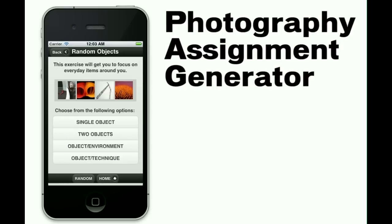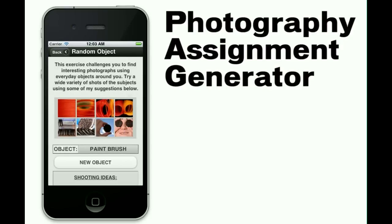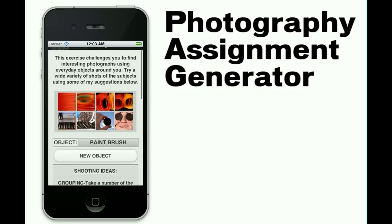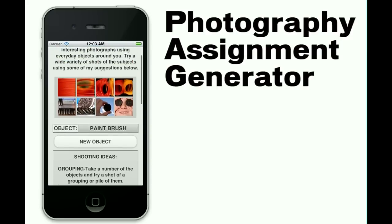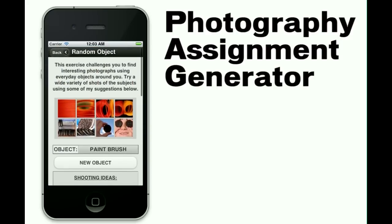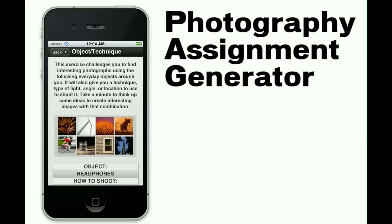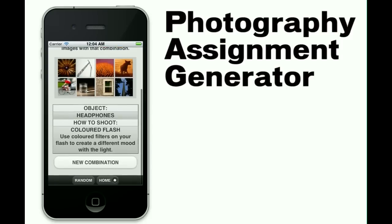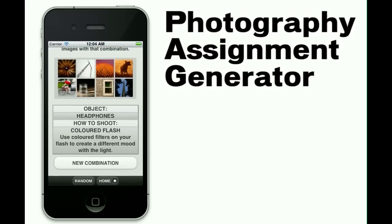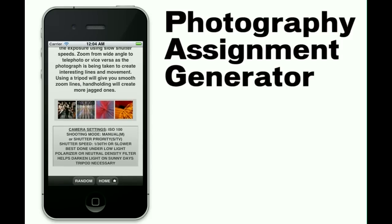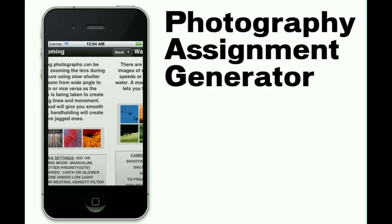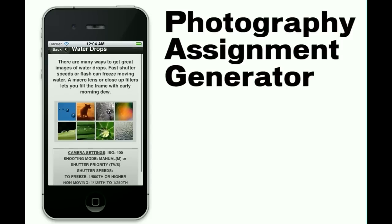There are also a series of random object assignments, combining them with environments, places, and techniques. This will give you literally hundreds of thousands of potential assignments. You can choose from a list of assignments or let the app choose one for you. At any time, you can hit the random button at the bottom of the screen to get a new assignment. Hit it again, get another new one.